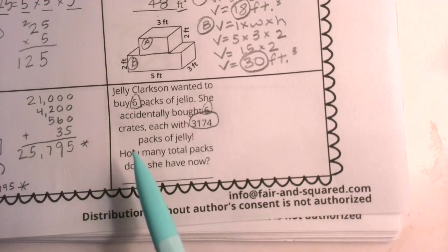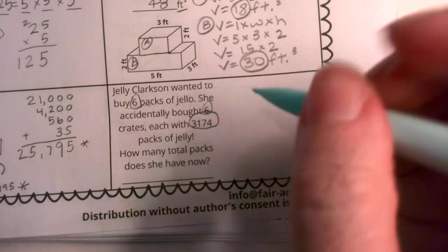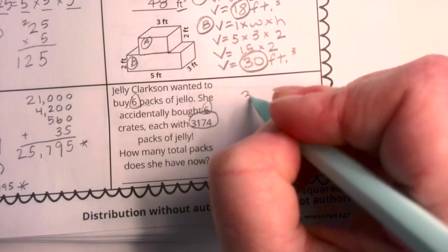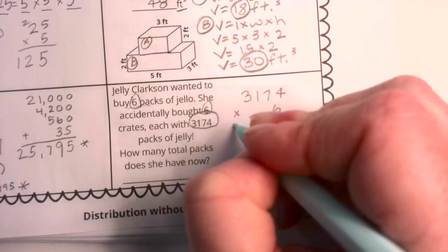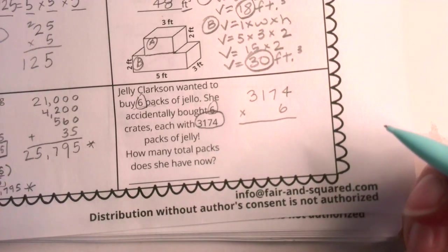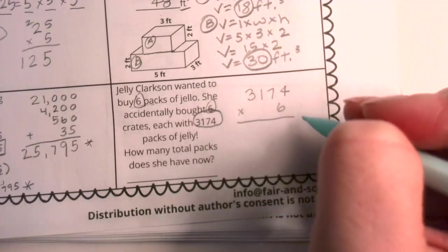Notice, sometimes we re-say things in problems, and certainly that's what we see here. Jelly Clarkson wanted to buy six packs of jello, but she accidentally bought six crates, each with. Notice, this six, really, we could have exchanged it with like a pronoun. She accidentally bought that many crates, right? Because we've already said the six. This six is a little bit redundant. Does not mean that we have to multiply by an additional six. I like to point that out because boys and girls, good mathematicians are also good readers. Truly, those skills go together. This is multiplication.